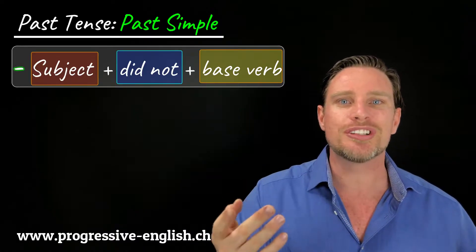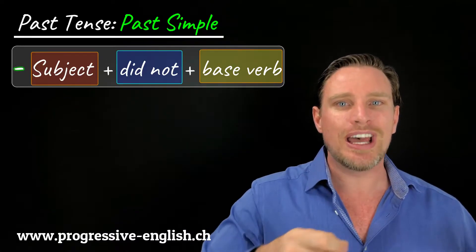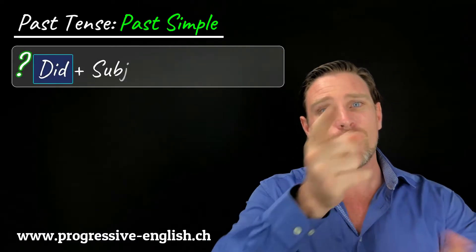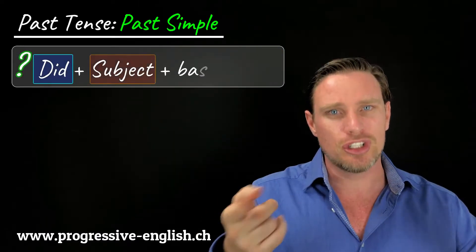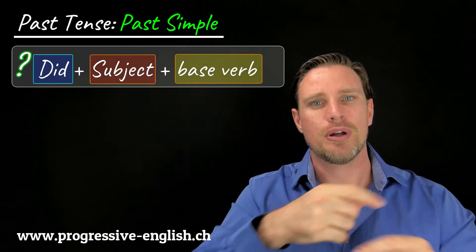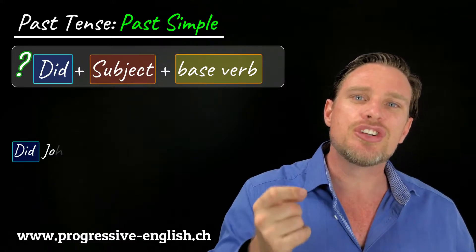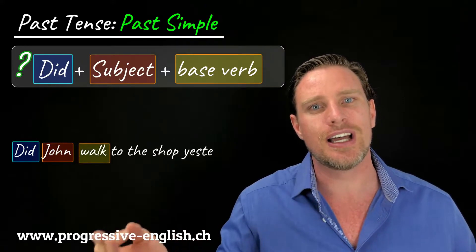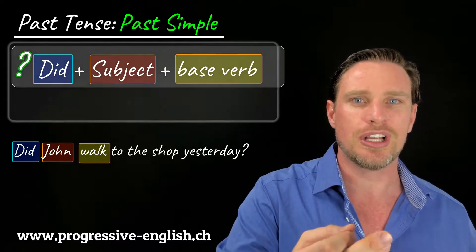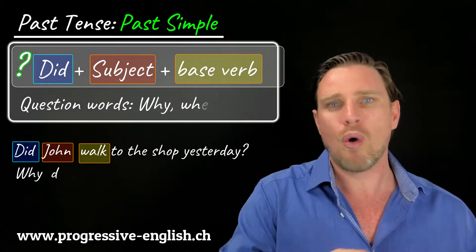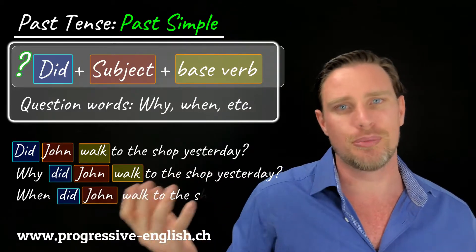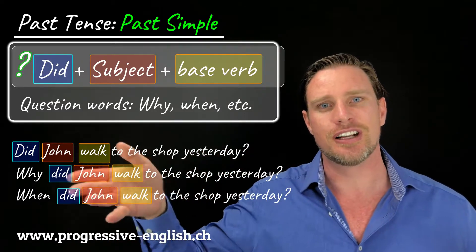With questions, we add the auxiliary verb 'did' before the subject — we swap the order of the subject and auxiliary verb, as we usually do with questions. So it becomes: Did John walk to the shop yesterday? And we can add question words: Why did John walk to the shop yesterday? When did John walk to the shop yesterday? Et cetera.